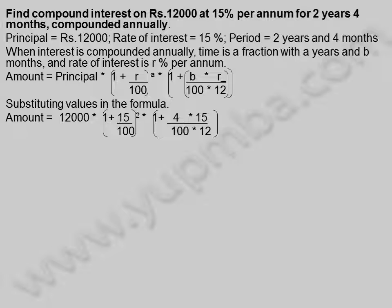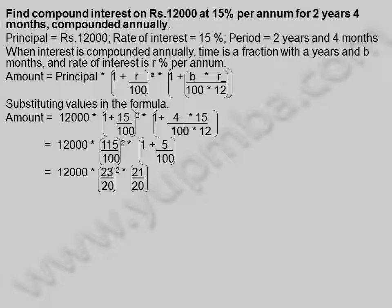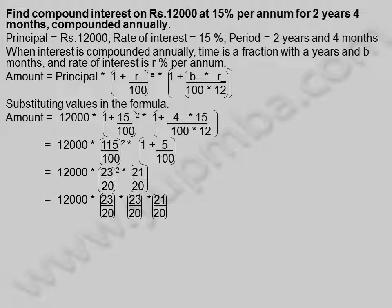Substituting values: Amount = 12,000 × (1 + 15/100)² × (1 + 4×15 / (100×12)) = 12,000 × (115/100)² × (1 + 5/100) = 12,000 × (23/20)² × (21/20).